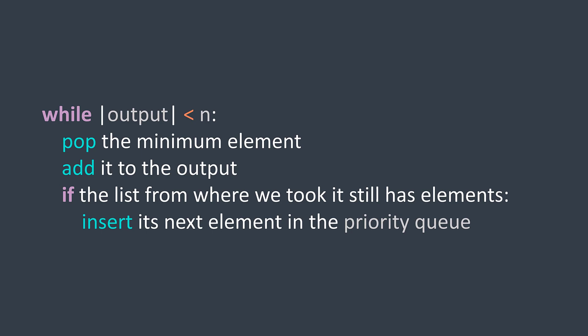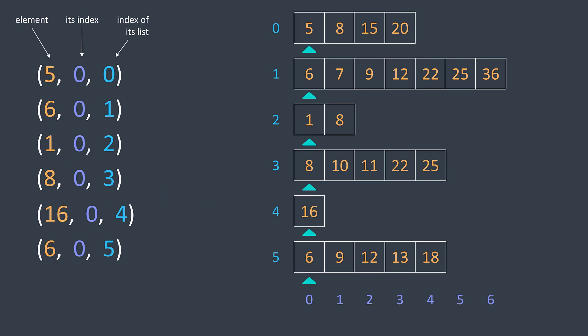In code, we use the heapq module to avoid implementing a priority queue from scratch. Because heapq doesn't provide the ability to set a comparison key, we store tuples where the first element determines the order — in our case, the value of the element in the list. The tuples in our priority queue contain three elements: the value of the element, its position in the list, and the index of the list it belongs to. Let me show you an example to understand.